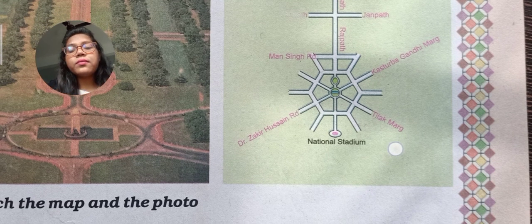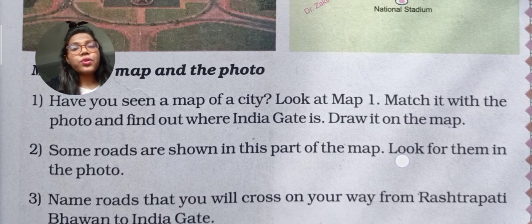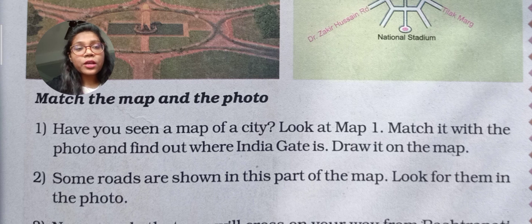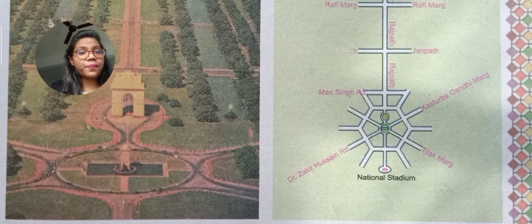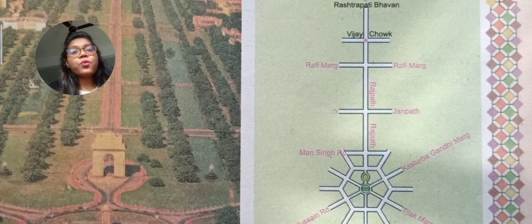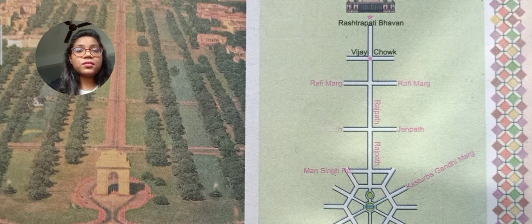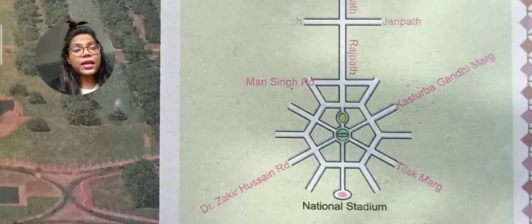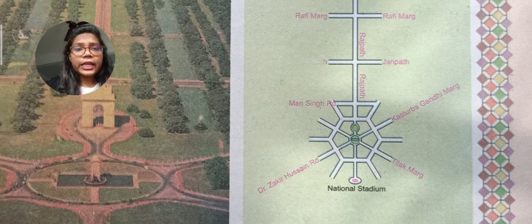Now let's find out certain things from the map. You have to read the question carefully: 'Have you seen a map of a city? Look at Map 1, compare it with the photo, and find out where India Gate is — draw it on the map.' India Gate is marked as a small circle on the map.